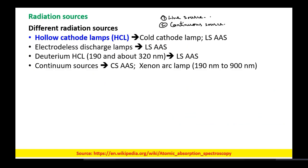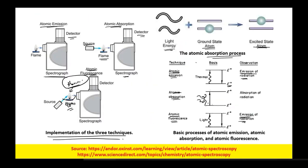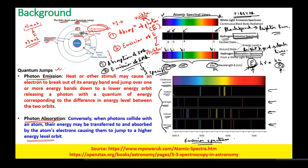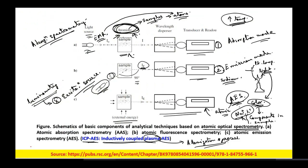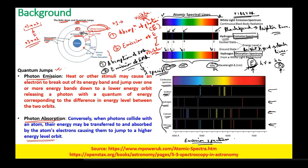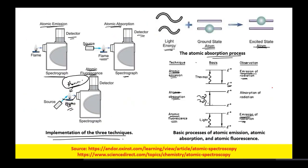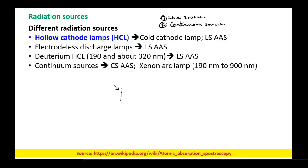A line source means you will have only a particular wavelength of radiations coming out. For example, the sodium spectral lines — only these discrete colored lines will be absorbed.